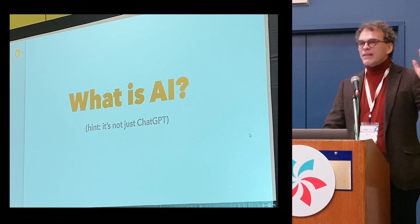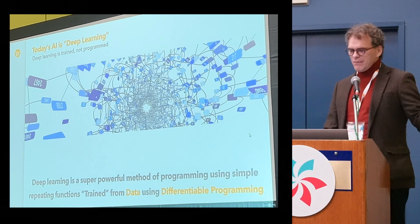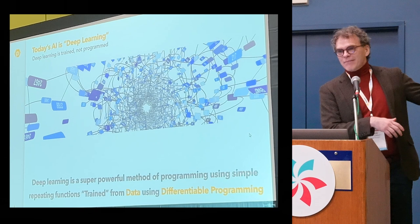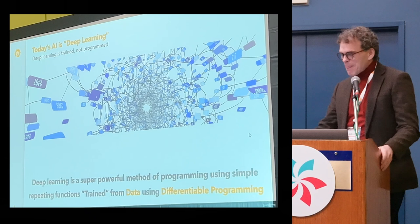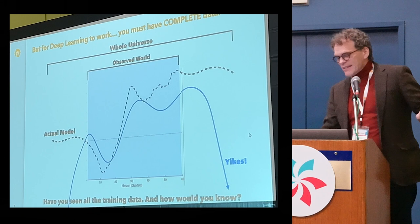Deep learning is really just a different way of programming. Instead of programming manually, we're training models and we use data and a thing called differentiable programming. The first thing to understand about data is you need enough of it. You have a problem that you need enough of it that you never exit the trained world — that observed world — and enter the rest of the universe. That's the data problem, and there's another problem: how would you know if you did?